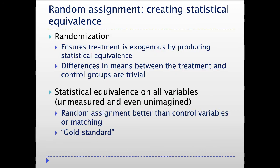Why must it be random? Because randomization makes the treatment exogenous — it comes from outside and doesn't depend on people's individual characteristics. That produces statistical equivalence, meaning the difference in means between the treatment and control groups is trivial. Critically, this works on all variables, not just the ones we can measure — including variables we can't measure or even imagine. In observational studies we were worried about causal drivers we didn't even know about.